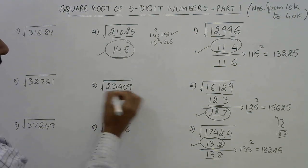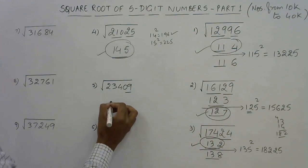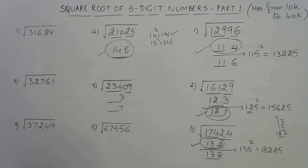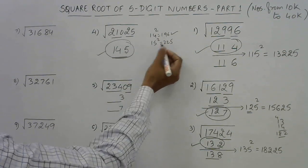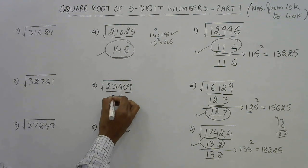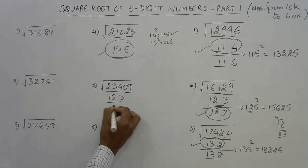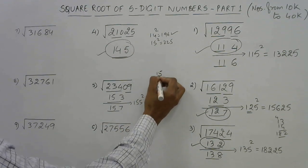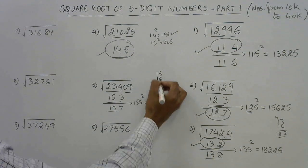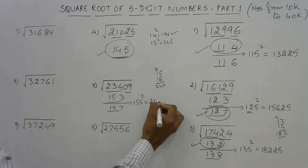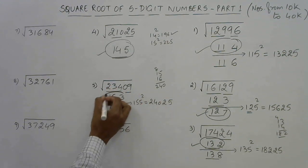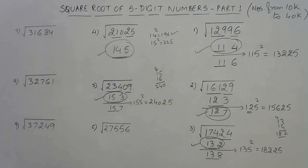Let's see another one ending with 9. Just like before, the answer will end with either 3 or 7. The triplet is 234. We check: 15 squared is 225, which is just below 234, so 15 is the remaining part. Take the intermediate number 155 squared. 15 multiplied by its successor 16: 15 times 16 is 240, followed by 25, giving 24025. Comparing: the original number is smaller than 24025, so our answer is the smaller one — 153.